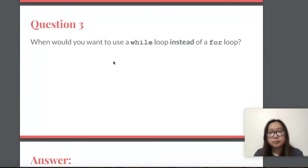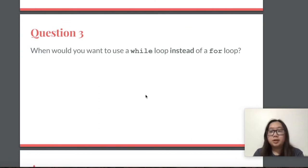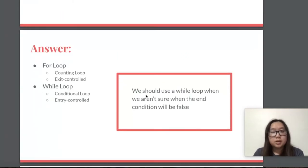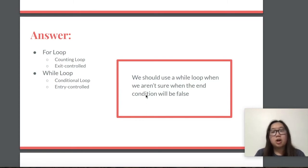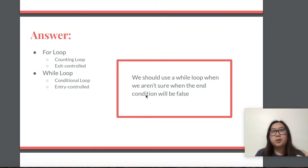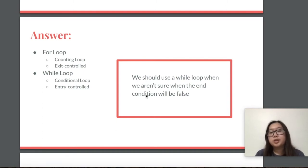For question three: why would you want to use a while loop instead of a for loop? For loops are counting loops — they are used when you are running through a sequence or a range, and they are exit-controlled since you know when that sequence or range will end. While loops are conditional loops — the while loop continues to run as long as the conditional is true, and once the conditional is false you break out of the loop, making it an entry-controlled loop. We would use a while loop when we aren't sure when the end condition will be false.